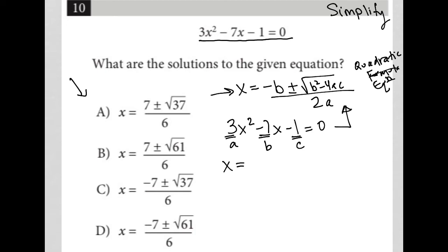So x equals negative B, we'll make that a positive 7, plus or minus the square root of B squared, which is negative 7 squared or negative 7 times negative 7, which is 49, minus 4 times A which was 3, times C which is negative 1, all over 2A or 2 times 3, which is 6.